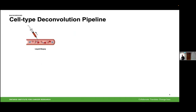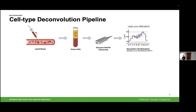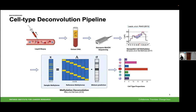We built a pipeline for doing cell-type deconvolution of nanopore sequencing. Following a blood draw, we extract the DNA, sequence on a MinION, and call methylation using Modkit. Then you run your deconvolution algorithm and you get a mixture proportion. And if you see any portion of DNA coming from epithelial tissue, there's likely going to be cancer in that tissue.